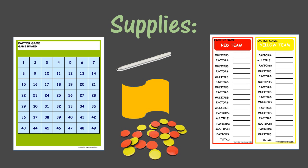The supplies that are provided in the pouch, along with your information sheet and directions, are a Factor Game board, a Factor Score board, a dry erase marker and eraser, and bicolored counters.